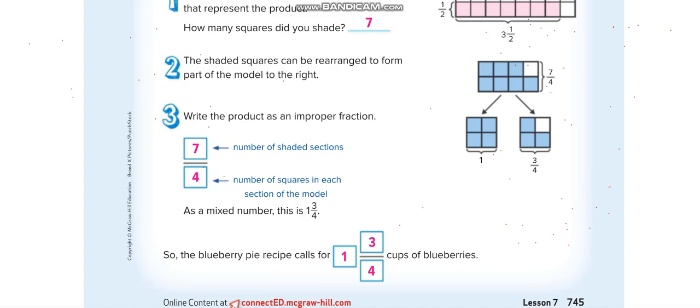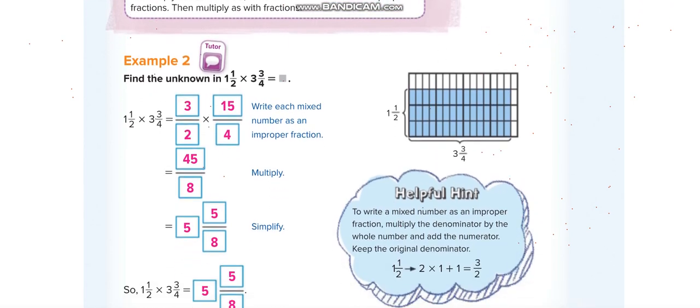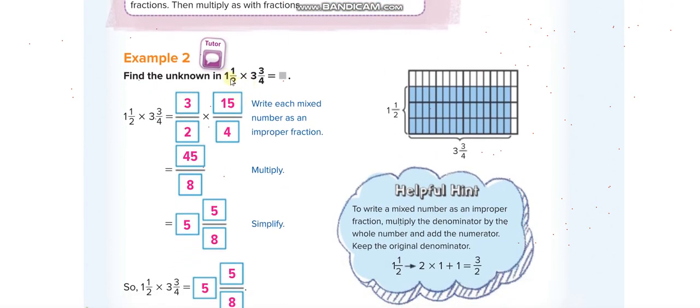Next page 746. Here you have to multiply two mixed numbers. So the first one as I told you in the last example, 1 times 2 that is 2 plus 1 that is 3 and the denominator same.